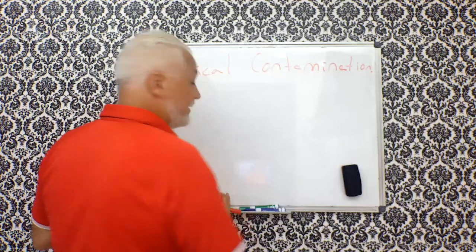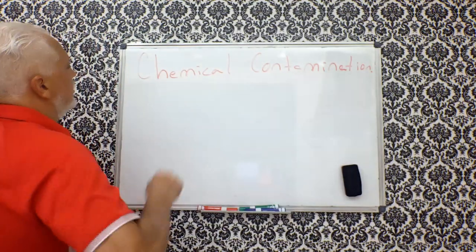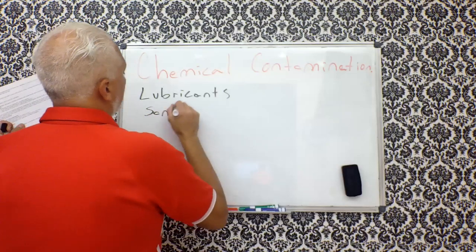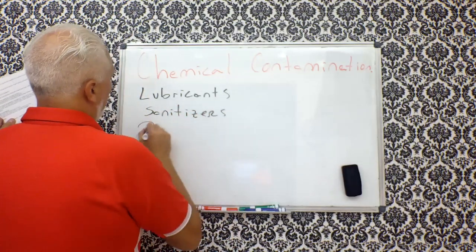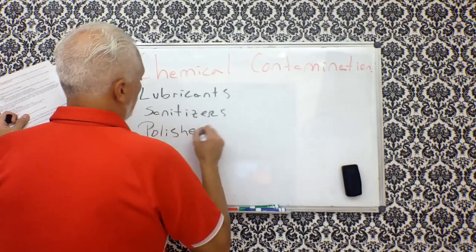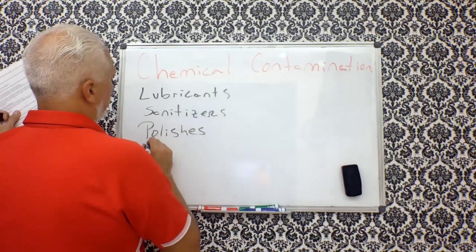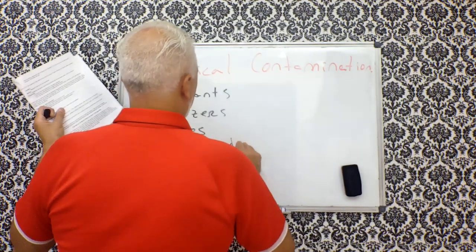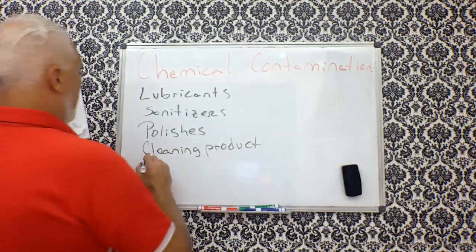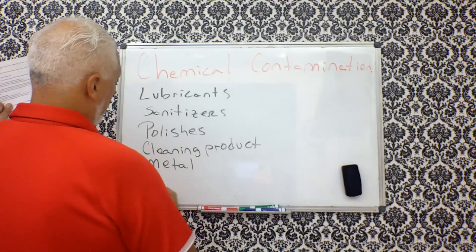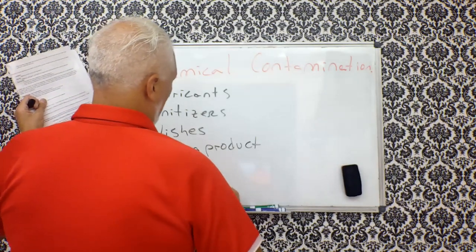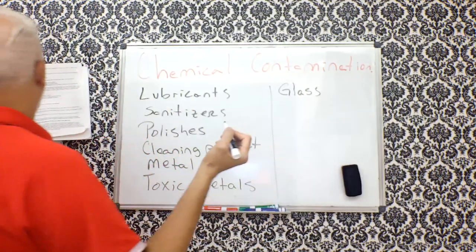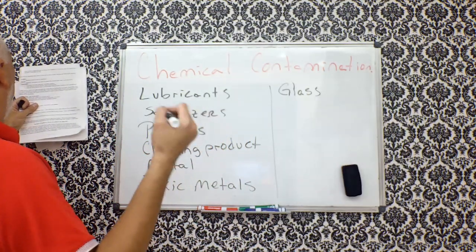Chemical contamination. So chemical contamination, ladies and gentlemen, looks like this. Lubricants. Sanitizers. Polishes. Cleaning products. What else? Toxic metal. Toxic metals. We also have glass.